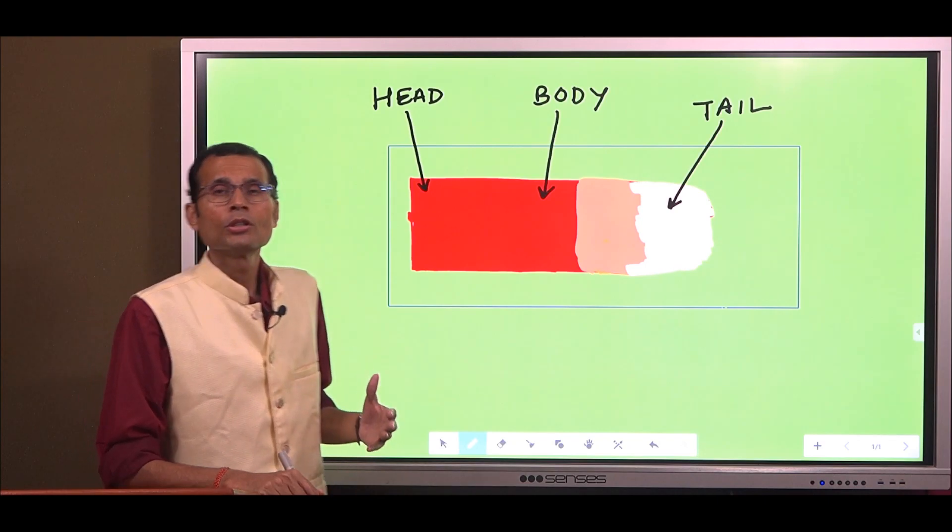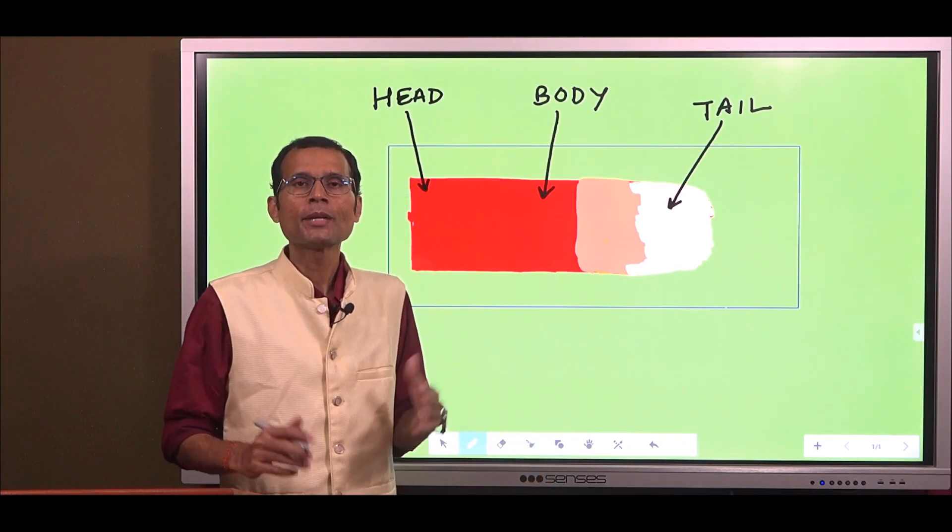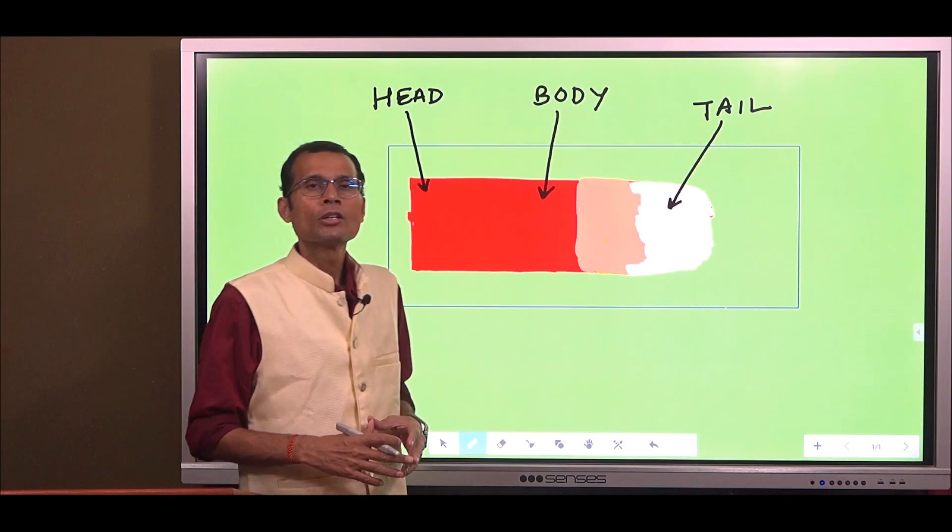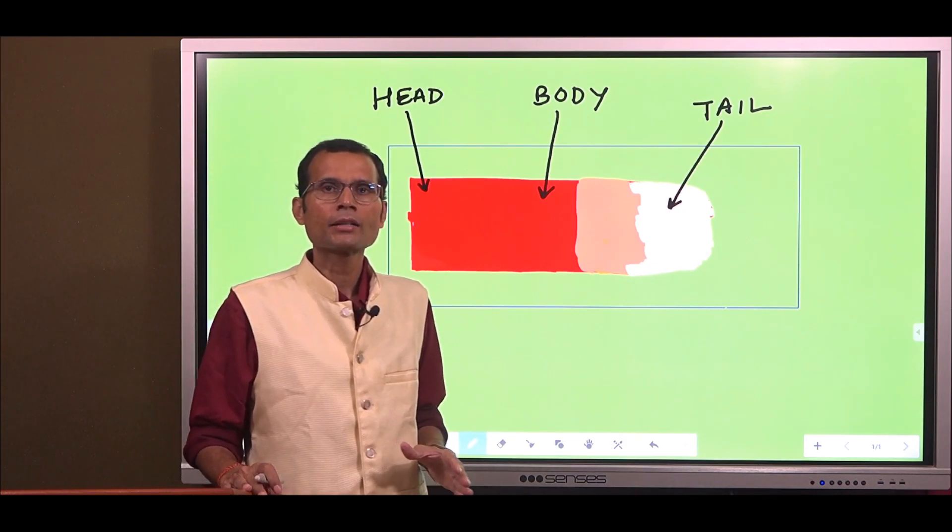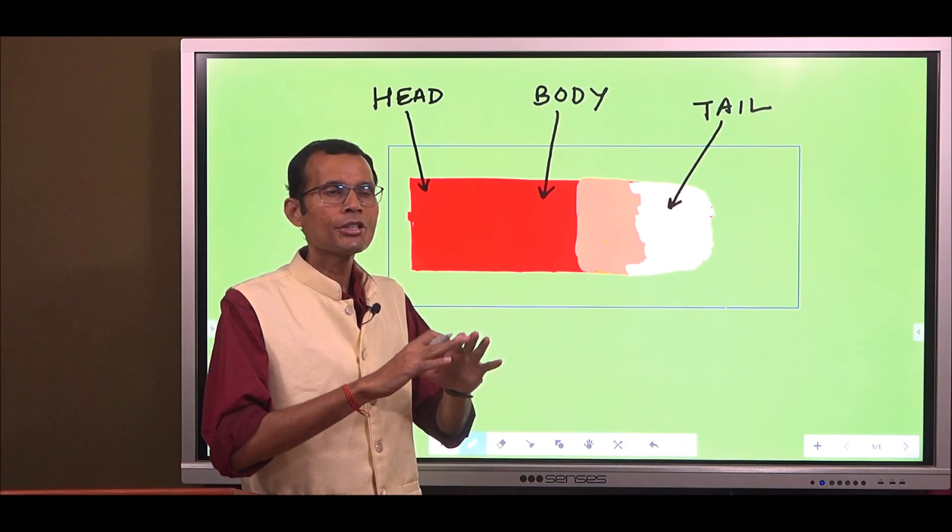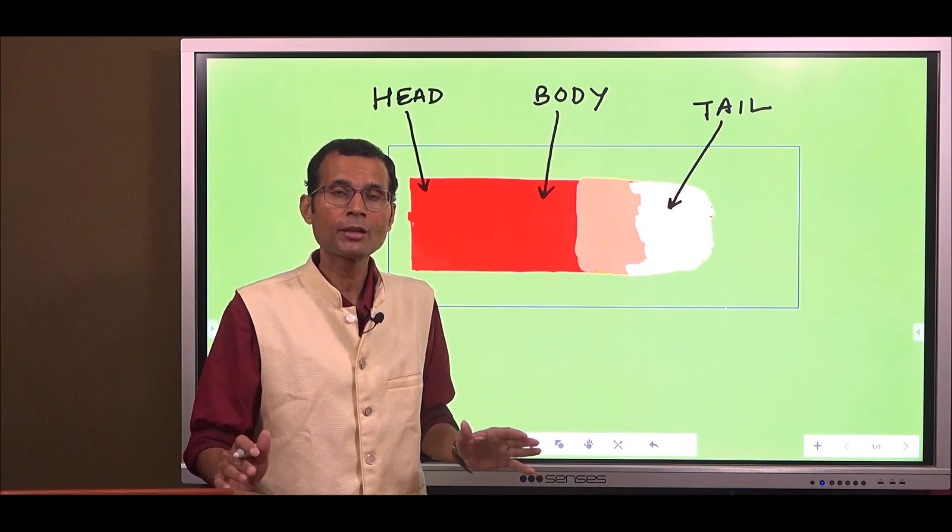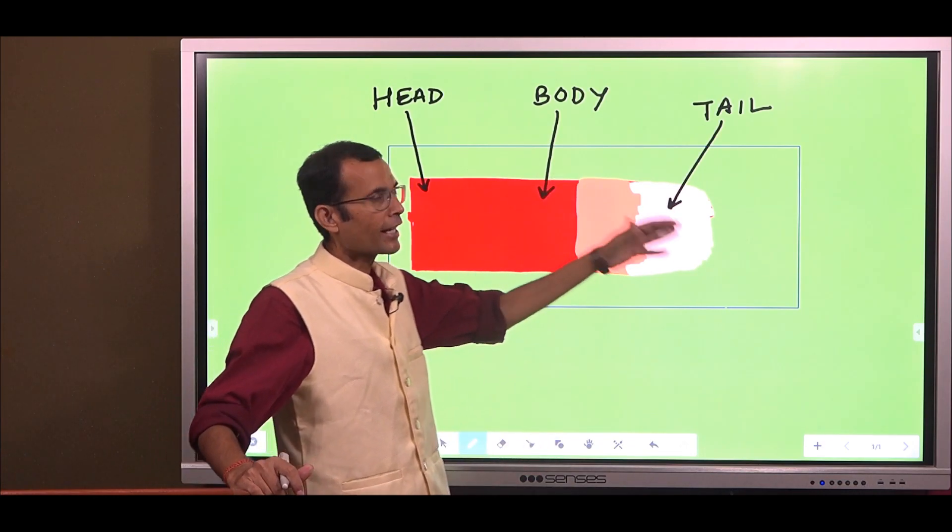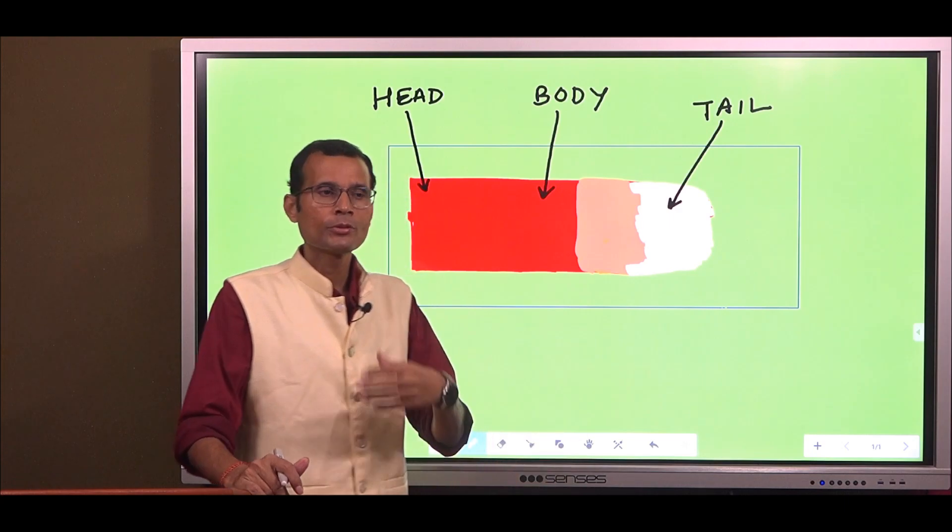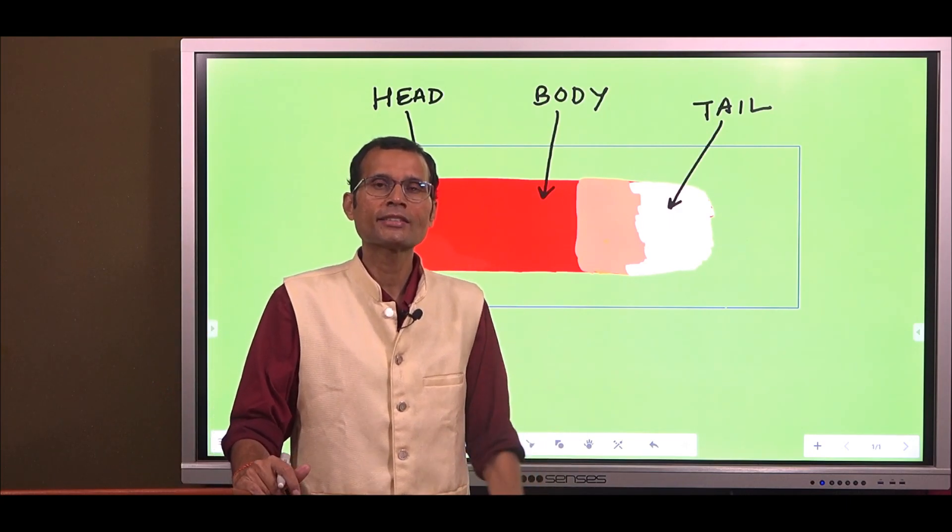Now just one more point needs to be highlighted here. WBCs are mainly found near the edges. Majority of the WBCs are found near the edges and periphery of any blood drop. Why is that?